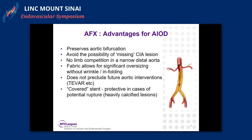Advantages for aorto-iliac occlusive disease are clear. It preserves the aortic bifurcation, avoids the possibility of missing a common iliac proximal lesion, and there's no limb competition in a narrow distal aorta. The fabric allows for significant oversize with little wrinkling or infolding. It doesn't preclude future aortic interventions such as TVAR, and the covered stent has an inherent protective nature in cases of potential rupture.